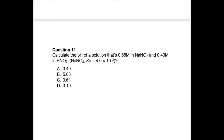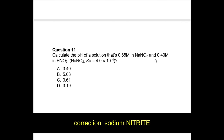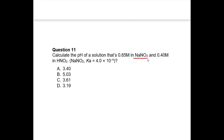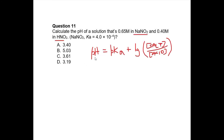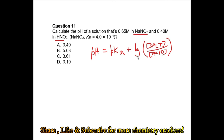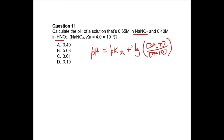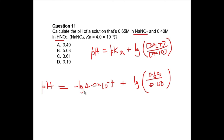Question eleven: calculate the pH of a solution that is 0.65 molar sodium nitrate and 0.4 molar HNO2. Recognizing a salt and a weak acid, this is a buffer solution. We use the Henderson-Hasselbalch equation: pH = pKa + log([salt]/[acid]). Filling in the values for Ka and the concentrations of salt and acid gives 3.4 + 0.21, which equals 3.61. The answer is C.